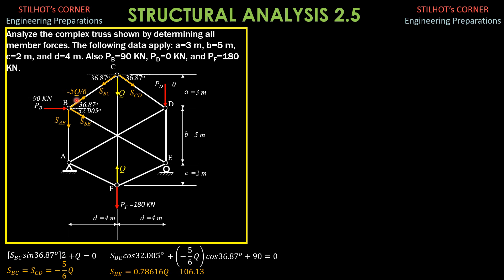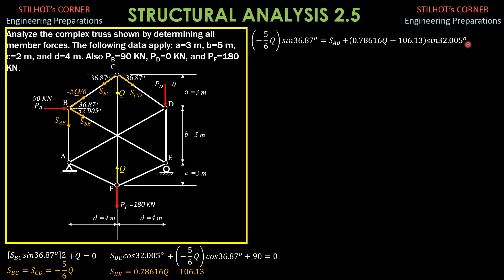Then, summation of forces vertical: negative 5/6 Q sine of 36.87 degrees equals SAB plus the vertical component of SBE, which is quantity 0.78616Q minus 106.13, times sine of 32.005 degrees. Simplifying and expressing SAB in terms of Q and the constant: SAB is negative 0.91666Q plus 56.248.